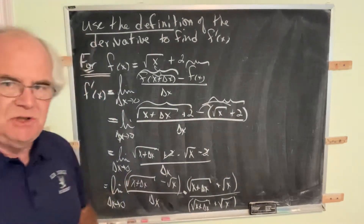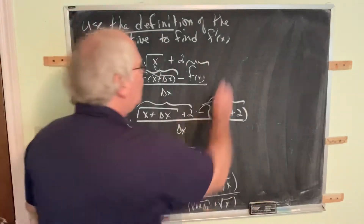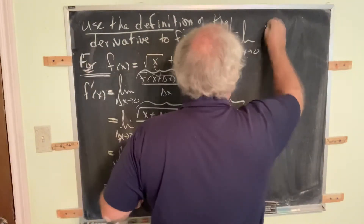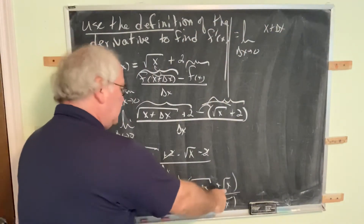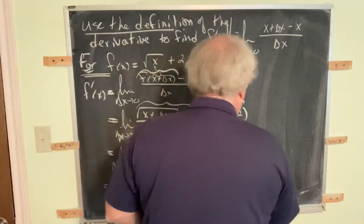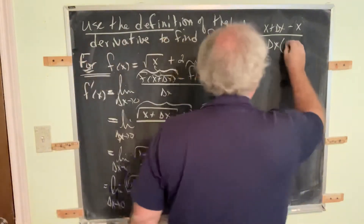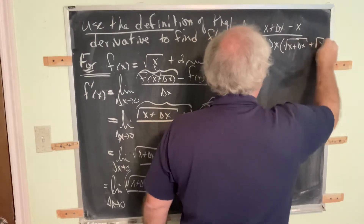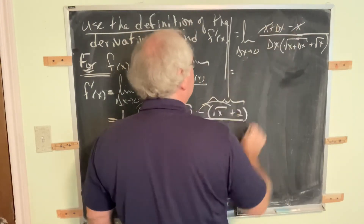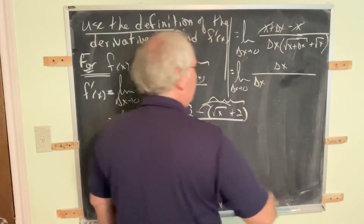That's the procedure for multiplying by the conjugate, and that's one of the reasons we plowed this ground back in chapter 1. So this is now equal to the limit as delta x goes to 0: squaring the first gives x plus delta x, squaring the last gives x — so the numerator is x plus delta x minus x — all over delta x times the larger conjugate expression in the denominator. Delta x in the numerator over delta x in the denominator — we know what's going to happen here.